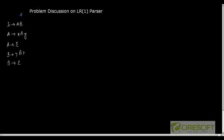To create the LR1 parse table, we first add one more production: S' is equal to S dollar. This augmented production is added to start the LR1 parse table construction.